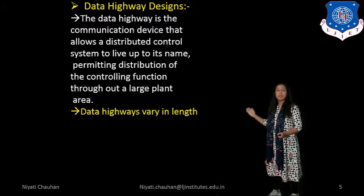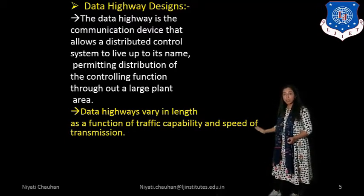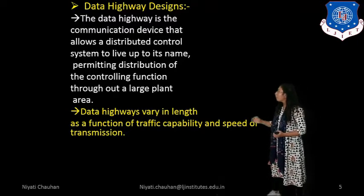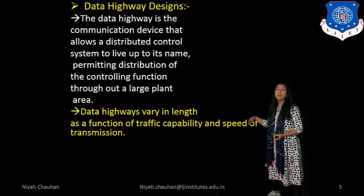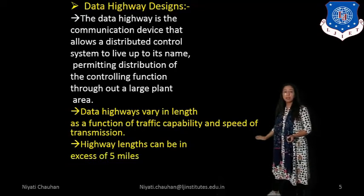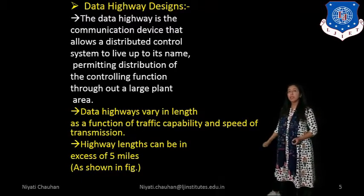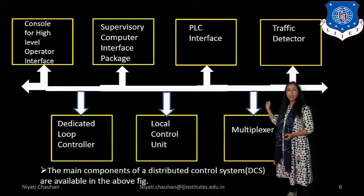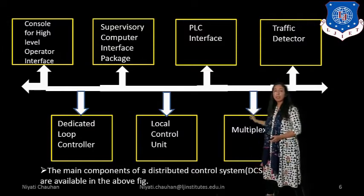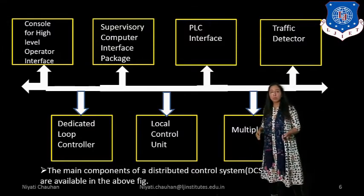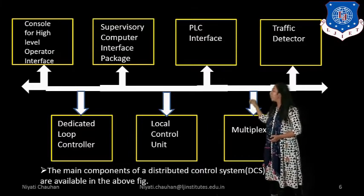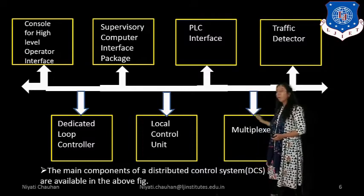Data highway varies in length as a function of traffic capability and speed of transmission. Data highway length can be in excess of 5 miles, as you can see in the diagram. In the diagram, you can see high-level operators interface, supervisory computer, PLC, traffic detector, multiplexer, local control unit, and dedicated room — all devices connected with the data highway. That is why we use a data highway in a distributed control system for communication with all devices.